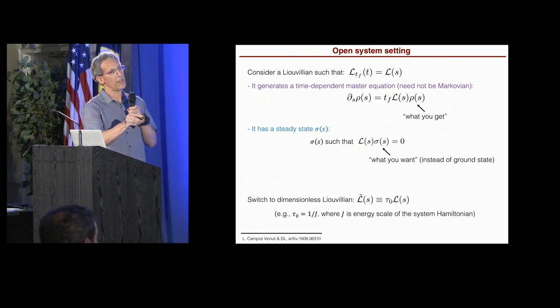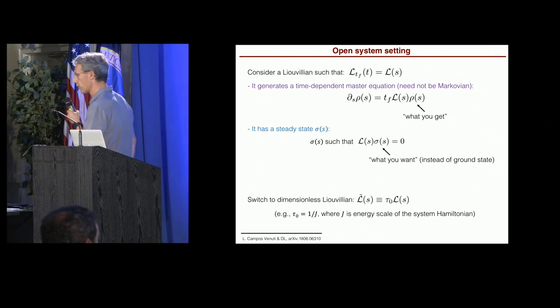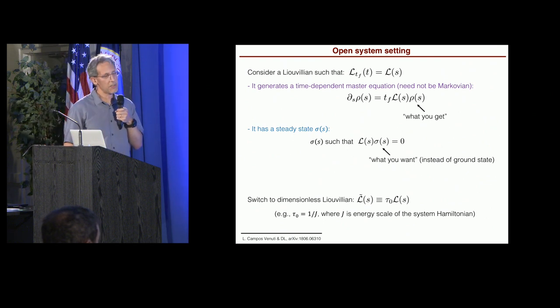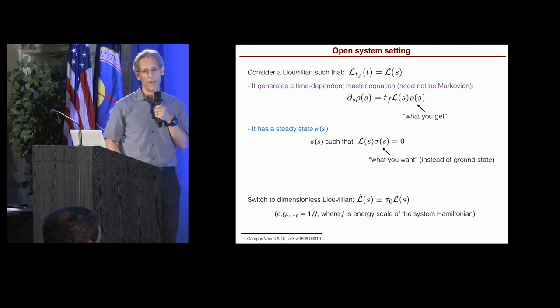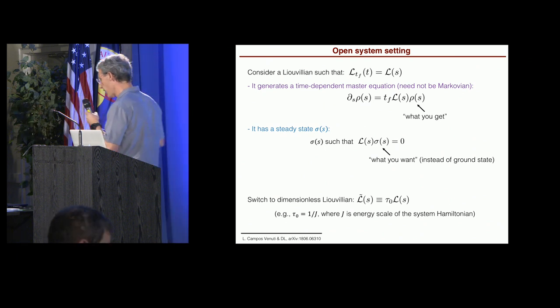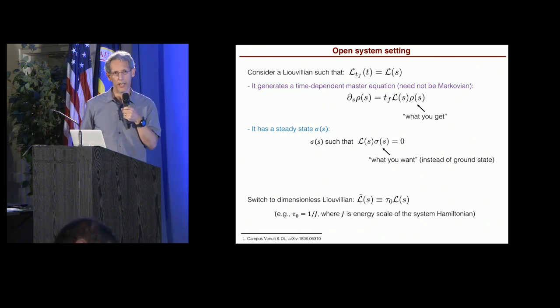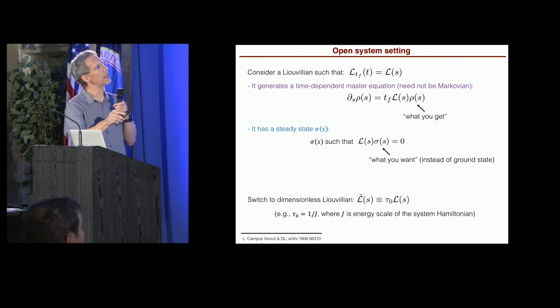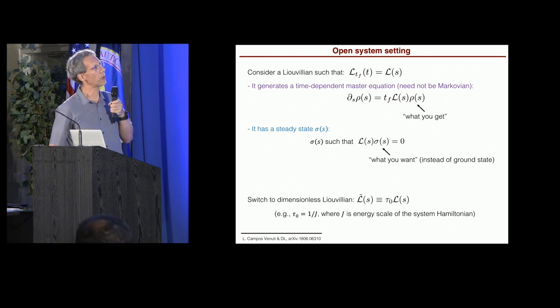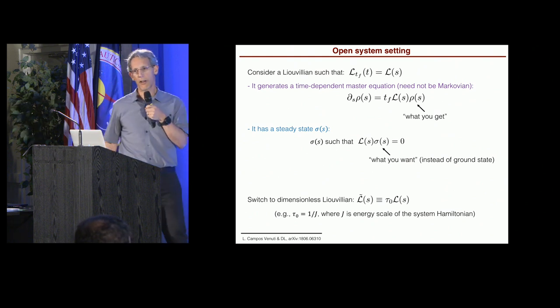And this Liouvillian has a steady state. I'm going to call it sigma of s. The steady state is defined as the state that is annihilated by the Liouvillian. The Liouvillian evolution is contractive, so it goes towards that steady state. That's what this gives if you plug it into its differential equation. So the steady state replaces the ground state. So now the what-you-want part is not a pure state, not the ground state. Rather, the thing you should naturally want in open system evolution is the steady state.